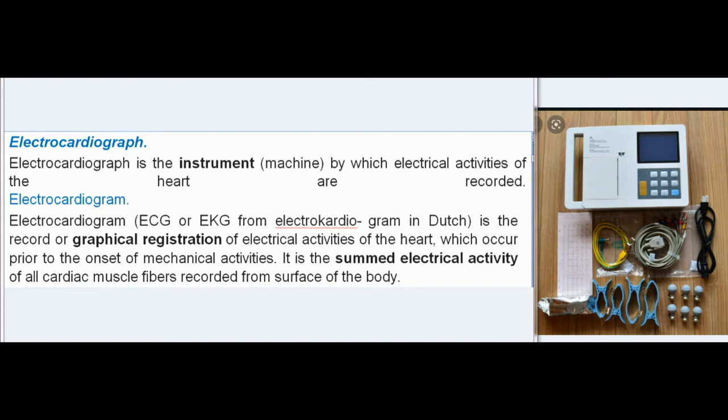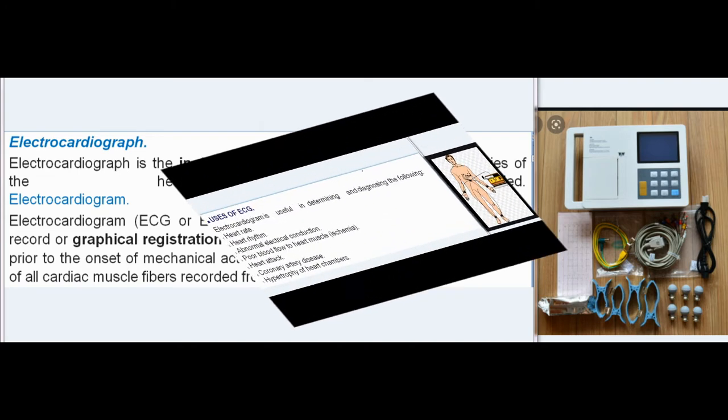Electrocardiogram — ECG or EKG (from electrocardiogram in Dutch) — is the record or graphical registration of electrical activities of the heart, which occur prior to the onset of mechanical activities. It is the summed electrical activity of all cardiac muscle fibers recorded from the surface of the body.